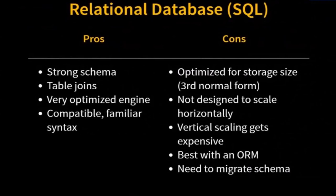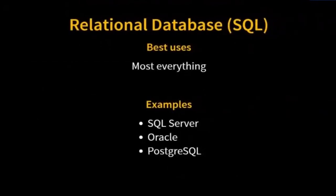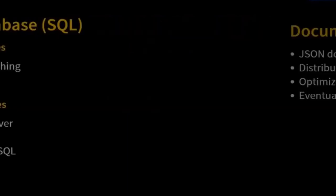On the upside, relational databases have a strong schema, table joins, a very optimized engine, and compatible familiar syntax. On the downside, it was built in an era where we didn't have multiple processors working together, so generally a relational database is one big machine. We can vertically scale easily, but horizontally scaling is hard. A relational database is a good default — if you have a monolithic database, it is probably a relational database.